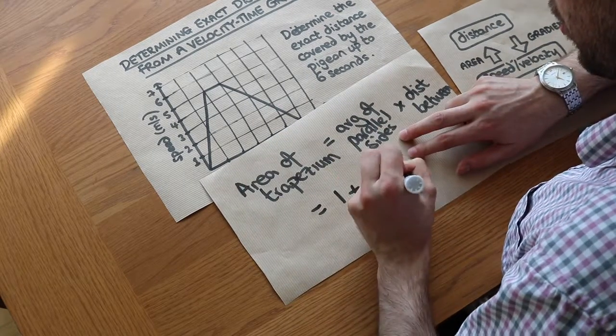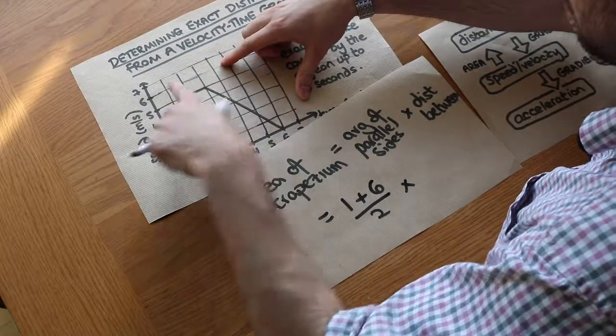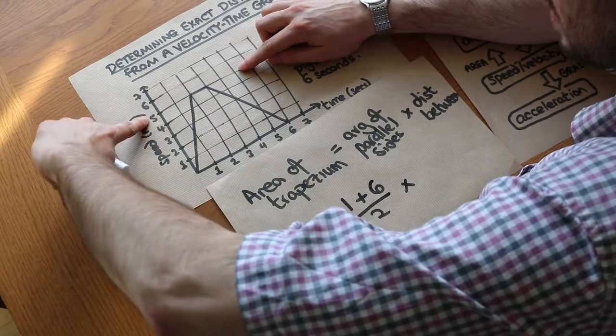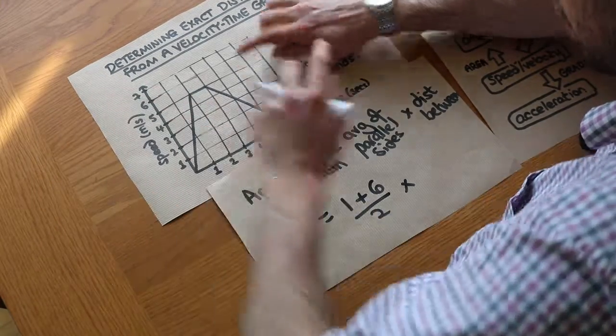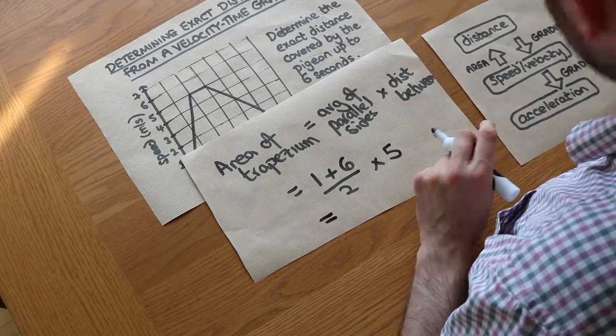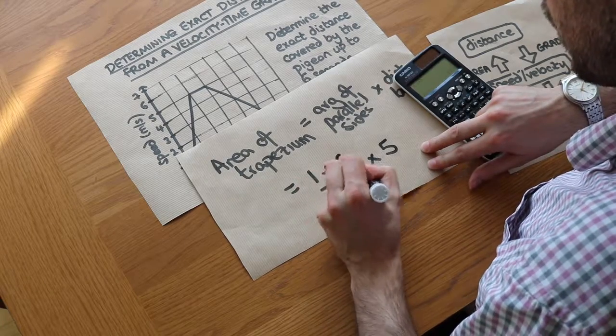And then you times it by the distance between those two parallel sides, which is that distance there, the height. We can see that height is five, so we times by five. If we do that on a calculator we get 17.5, and the unit is going to be meters.